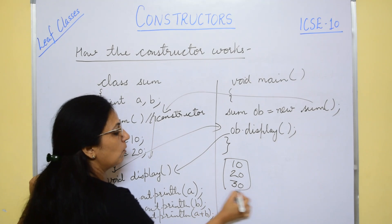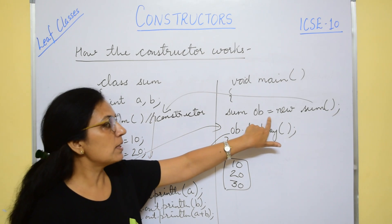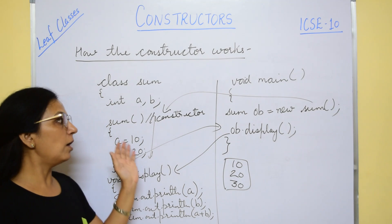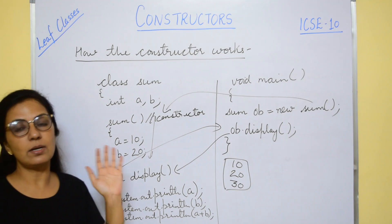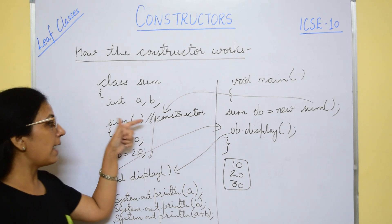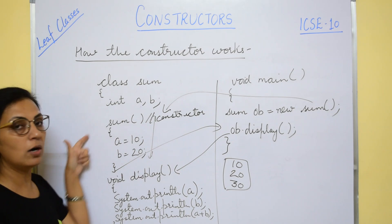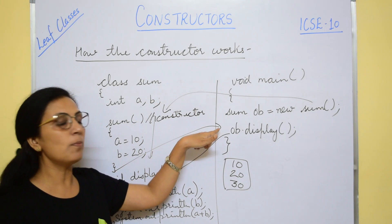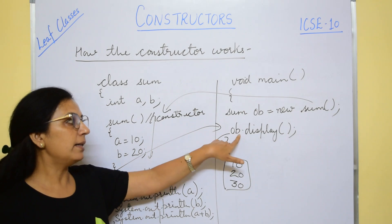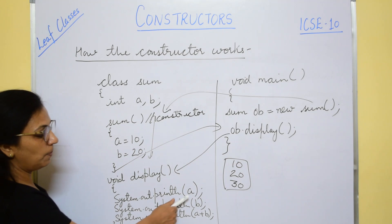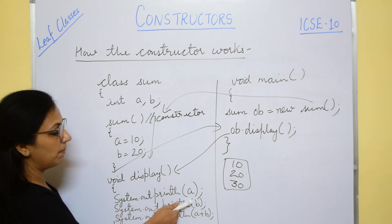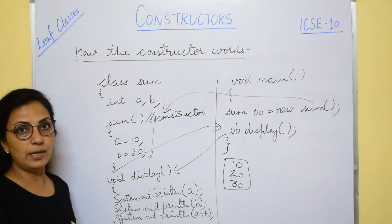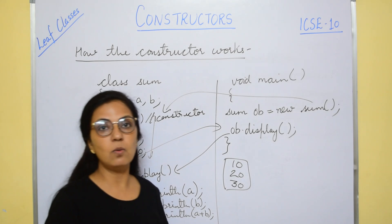Notice that when we use the object creation statement, the constructor is automatically called — we are not calling it separately. It initializes all the data members, then the closing braces take control back to main. When the display function is called and the values of data members are printed, the values initialized in the constructor are displayed. This is how the constructor works.